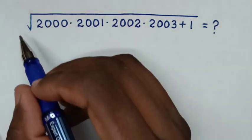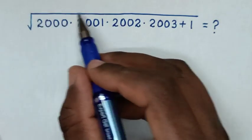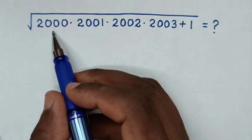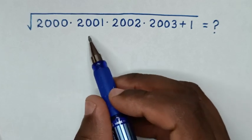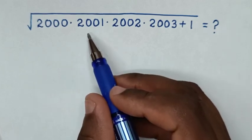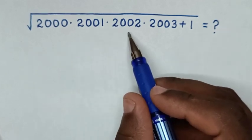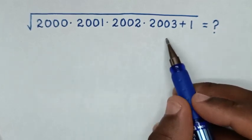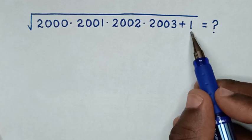Hello! How to solve square root of 2000 times 2001 times 2002 times 2003 plus 1.